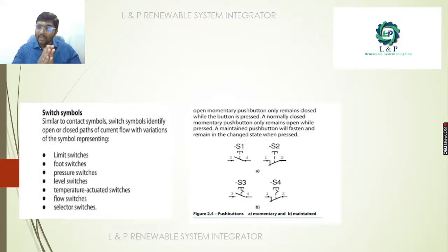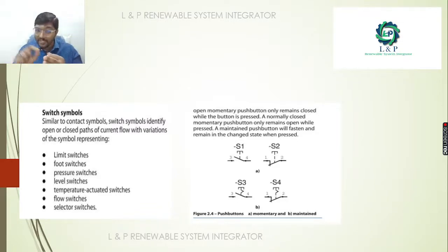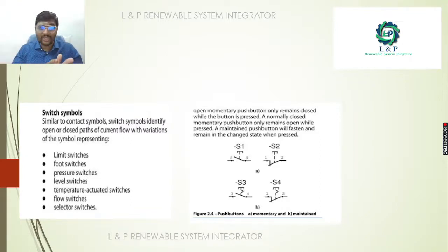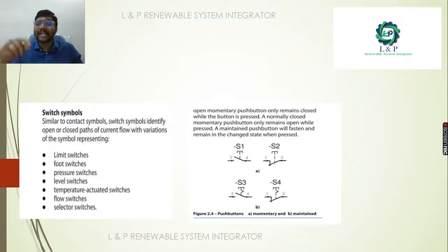Similar to contact symbols, switch symbols can represent open or closed states. There are many varieties: limit switches, proximity switches, pressure switches, level switches, temperature-activated switches, flow switches, and selector switches — each with its own symbol. On the right-hand side, diagram A represents push button switches, and diagram B represents momentary and maintained types.